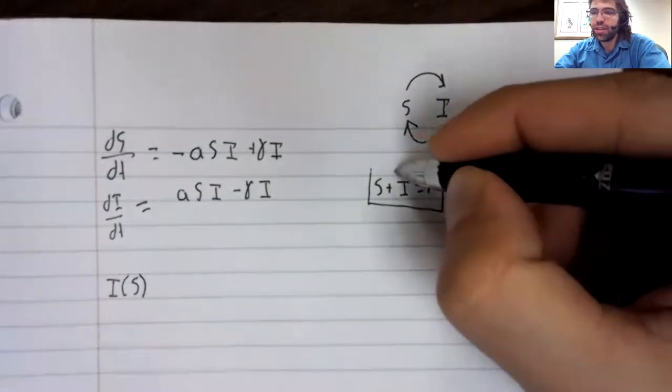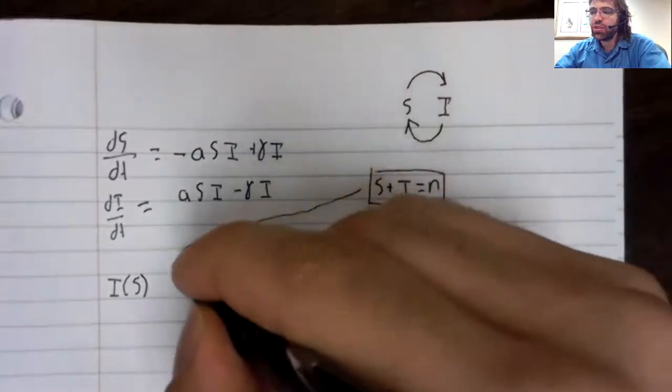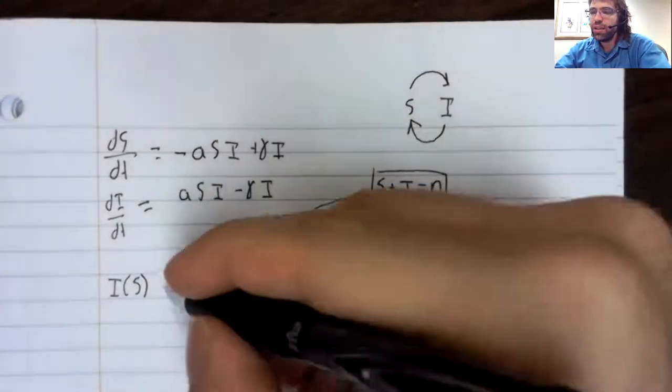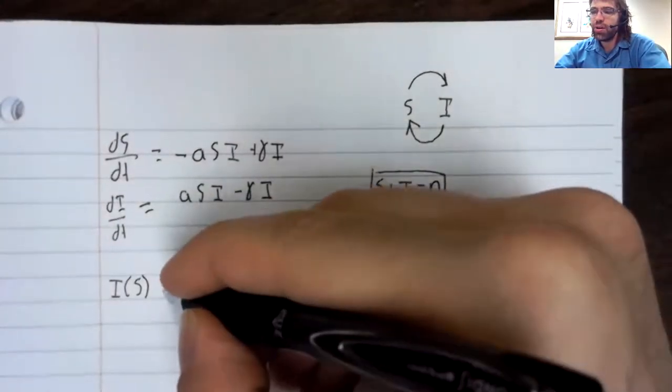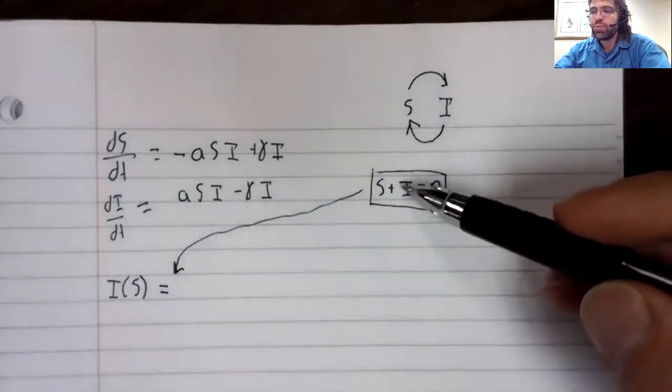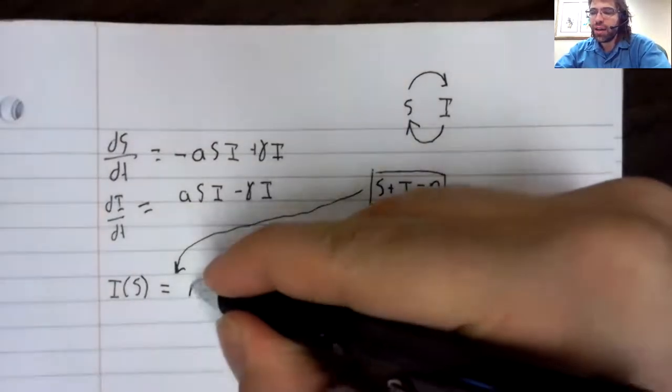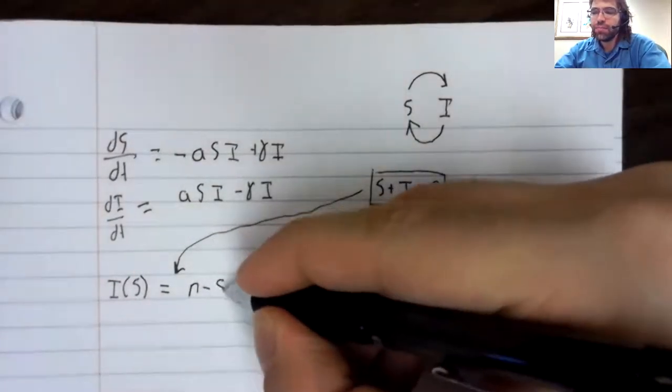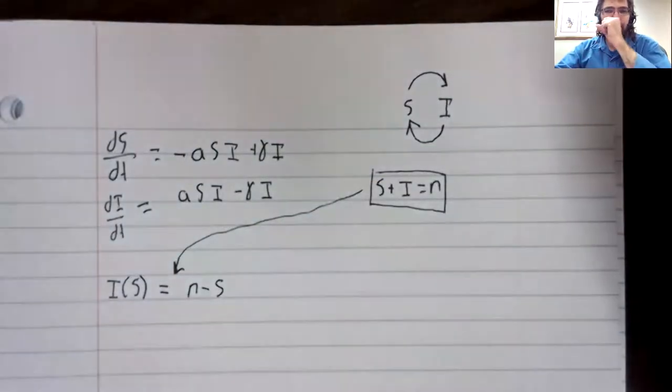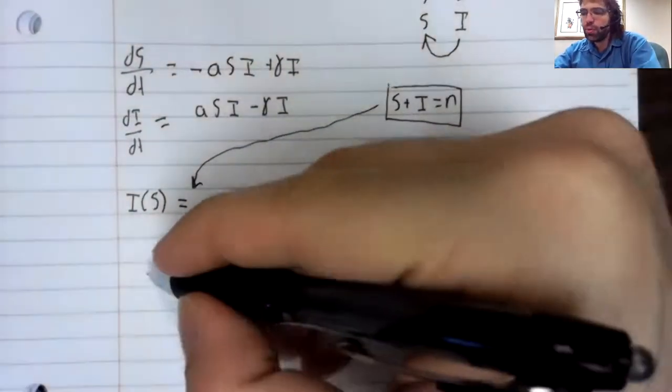And I give a hint that this should be easier than it was with the SIR model. If S plus I equals N, then I equals N minus S. Now for the fixed points.